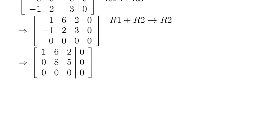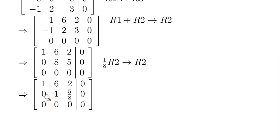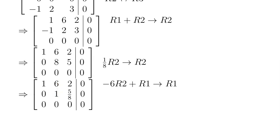Next, we need to turn 8 into 1, so we simply divide row 2 by 8. You end up with the entry 0, 1, 5/8, and 0. Then, using this 1, we need to get a 0 above it — so I'm going to multiply row 2 by negative 6 and add it to row 1, which replaces row 1. That gives us the following resulting matrix.